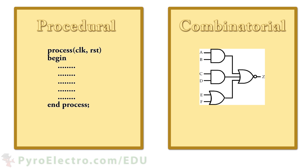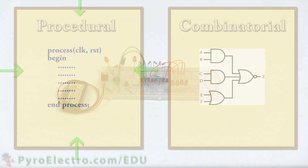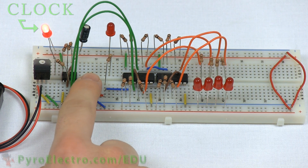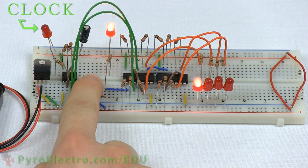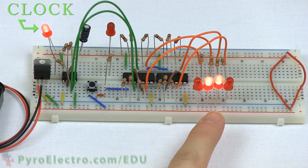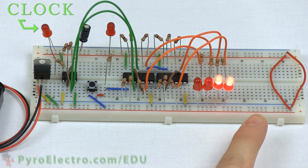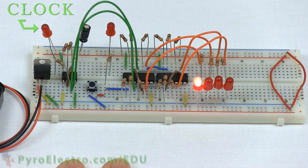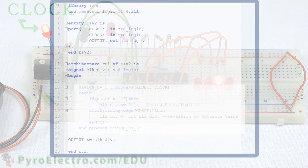In the previous lesson, we took a look and experimented with implementing combinatorial logic in a CPLD. But in this lesson, we're going to take a look at the other type of logic used in CPLDs and FPGAs called procedural logic. Procedural logic uses input signals, like a clock or reset, to drive state changes in outputs, similar to the clock in the shift register we designed in the Introduction to Digital Electronics course. Let's look at a quick example of procedural logic in VHDL code.